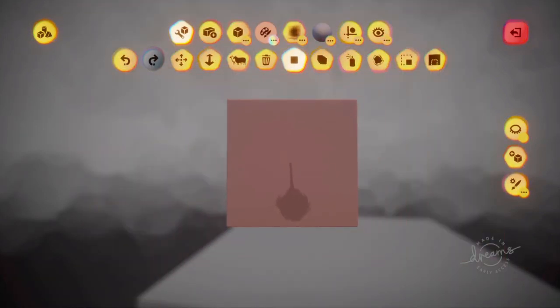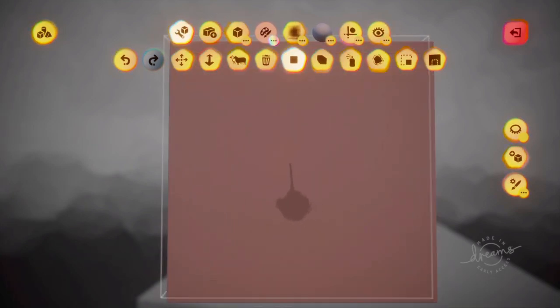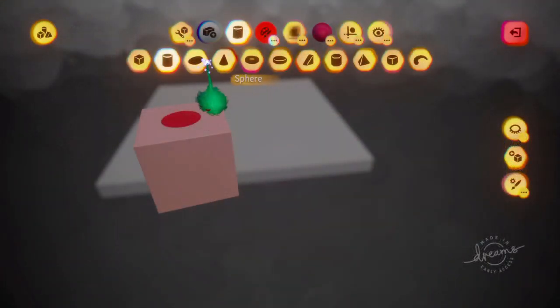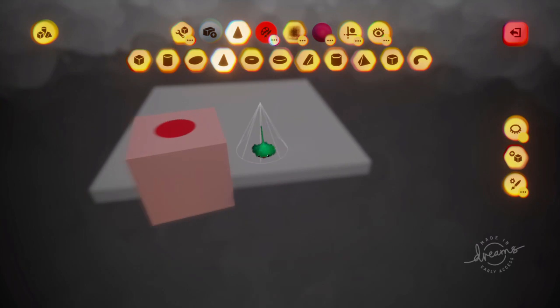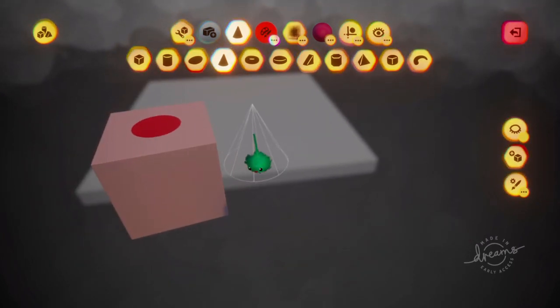By the way, triangle swaps between positive and negative, like that. You can use R1 to zoom in and zoom out of these shapes as well.